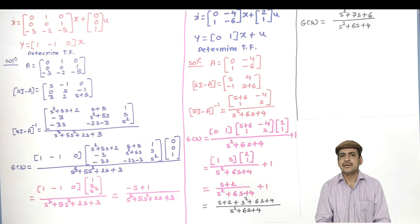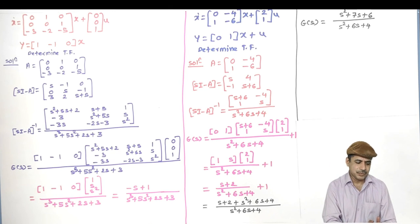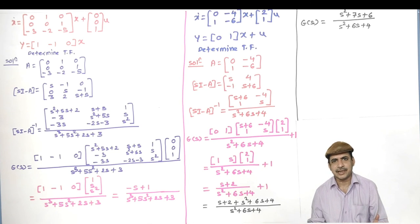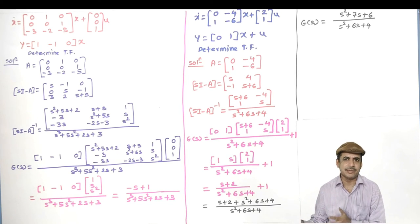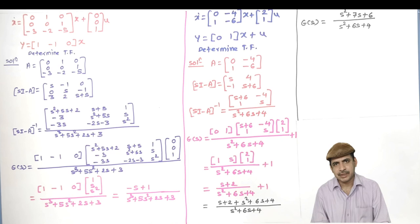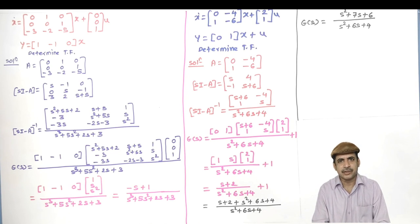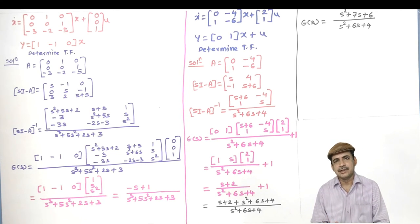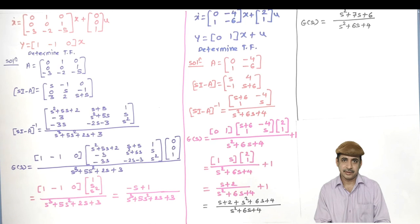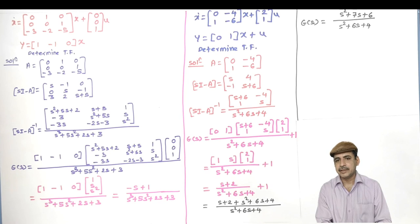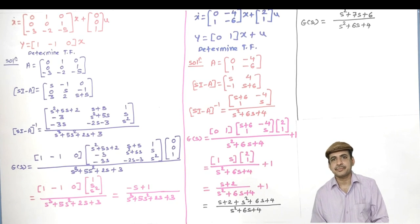We have now seen how to convert the transfer function into a state model in different forms — controllable canonical, observable canonical (also called phase variable forms), diagonal canonical, and Jordan canonical — and also how, if a state model is given, to convert it into a transfer function. In the next lecture we will see that if we have a state model in one form, how to transform it into another form. Thank you.